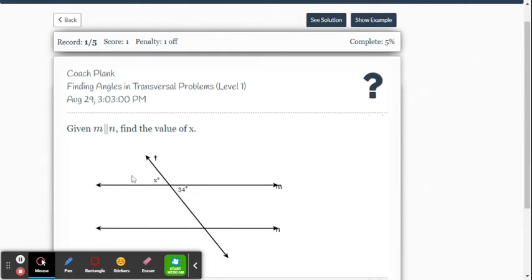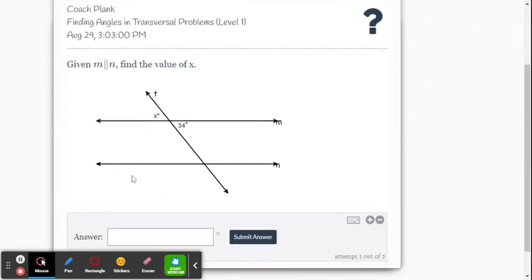Next problem. This one they actually gave us vertical angles has nothing to do with the parallel lines. But we know that vertical angles are always congruent. So we're just going to go 34 degrees.